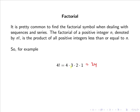Notice that within 4 by 3 by 2 by 1 we have other factorials — for instance, 3 factorial and also 2 factorial. So in fact, 4 factorial can be expressed as 4 multiplied by 3 factorial, or 4 multiplied by 3 multiplied by 2 factorial, or 4 multiplied by 3 multiplied by 2 multiplied by 1 factorial.